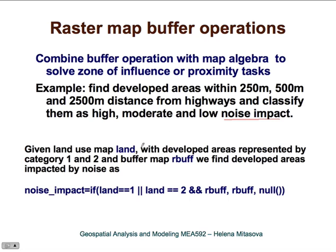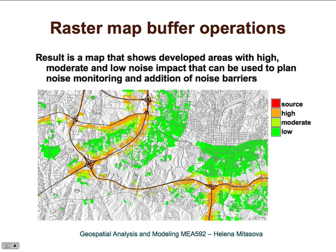If we have a land use map where developed areas are represented as category one and category two, and we also have the buffer map we just created, we can write a map algebra expression that extracts from the land use map all land located within the buffer using the AND operator. The resulting map shows orange areas as high impact, light green as moderate, and darker green as low noise impact.